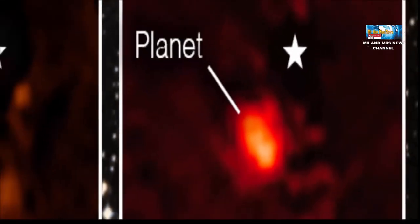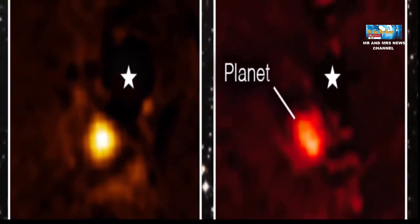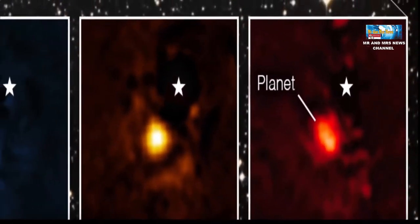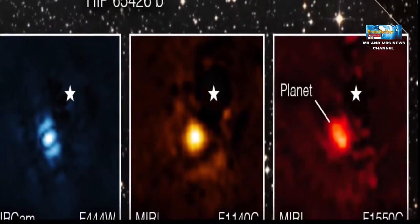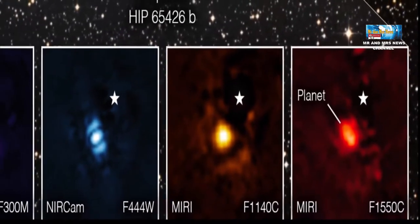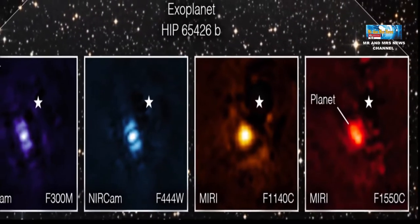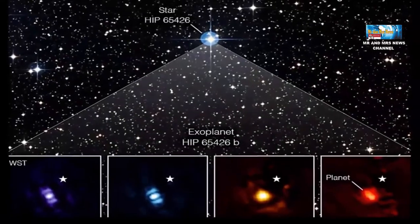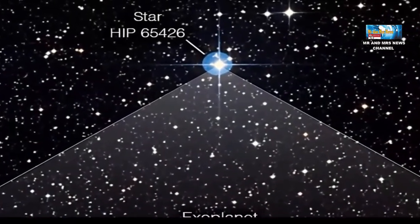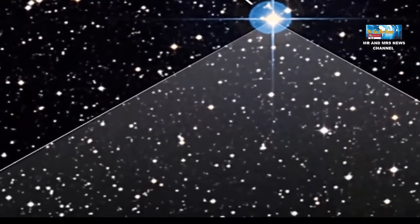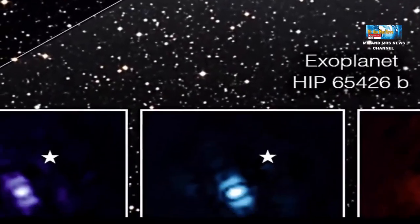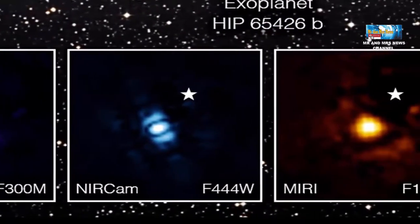Exoplanet atau planet di luar Tata Surya kita adalah raksasa gas yang massanya sekitar 6 hingga 12 kali massa Jupiter. Planet yang disebut HIP 65426B ini berusia sekitar 15 hingga 20 juta tahun, hanya sebuah planet bayi jika dibandingkan dengan Bumi yang berusia 4,5 miliar tahun.